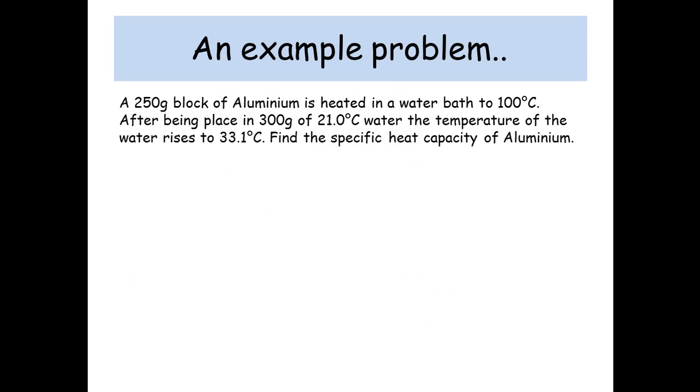So let's have a look at an example problem. A 250 gram block of aluminum is heated in a water bath to 100 degrees C. After being placed in 300 grams of 21 degrees C water, the temperature of the water rises to 33.1 degrees. Find the specific heat capacity of aluminum.